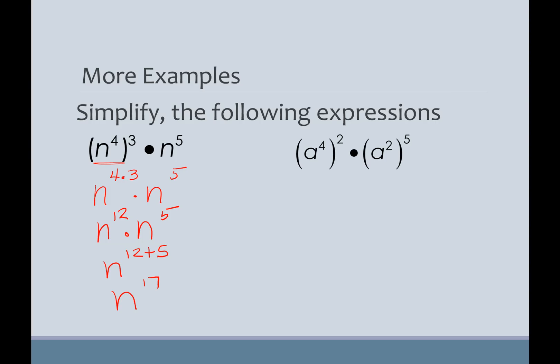So, here I've got two different things. A to the fourth squared is the same as A to the four times two. A squared to the fifth is A to the two times five. So, I'm going to get A to the eighth times A to the tenth. And now I add those. A to the eight plus ten is A to the eighteenth. And I'm done. There is work to be shown. Those of you that think your hands are going to fall off, it won't. I'm still holding on to my pen.